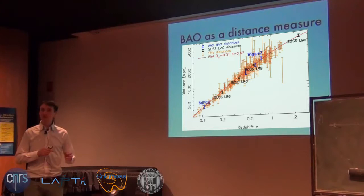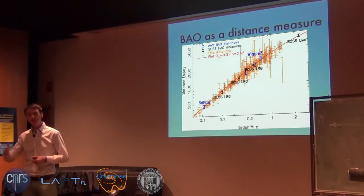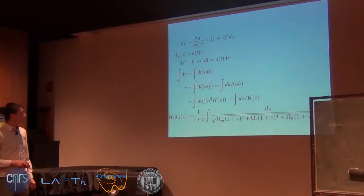I hope I've convinced you that we have a number of different observations of distances in the universe at different redshifts. We see that at different distances there are different redshifts, so there is clear evidence that the universe is expanding — because at different distances, things have different velocities.